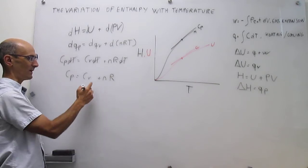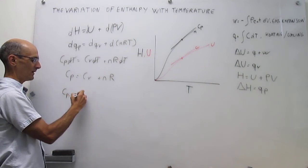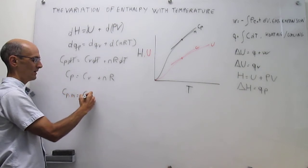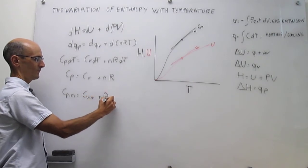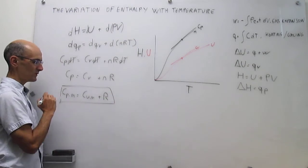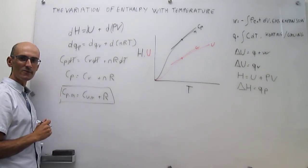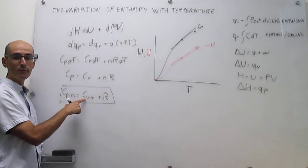But of course we can divide this by the number of moles to find that there is simply the molar heat capacity at constant pressure, molar heat capacity at constant volume plus r. So that is the relationship between the molar heat capacity at constant pressure and the molar heat capacity at constant volume for an ideal gas.